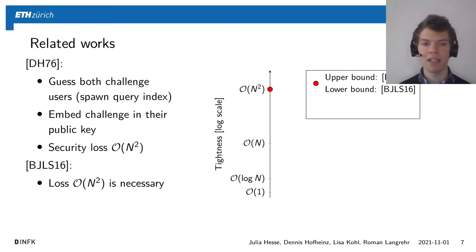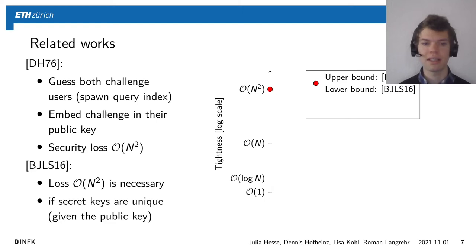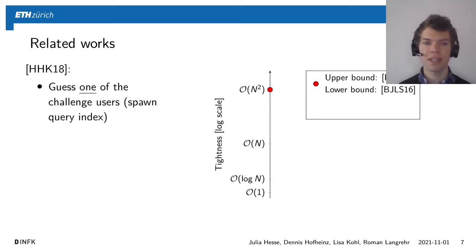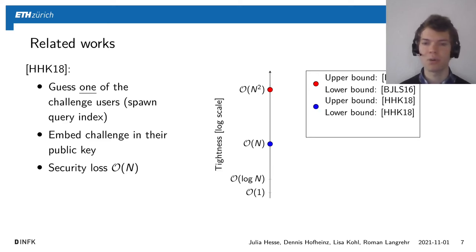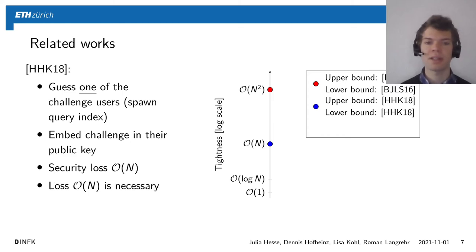A work by Bader et al. showed that this loss of N² is indeed necessary, at least if the secret keys are unique given the public key. The first work that managed to get around this lower bound is a work by Hesse et al. They only need to guess one of the challenge users and then embed a challenge in their public key, so they get a security loss of only O(N). They also give a lower bound showing that this loss O(N) is necessary for a large class of NIKEs.